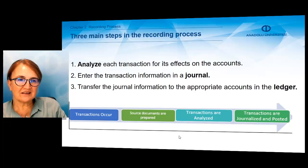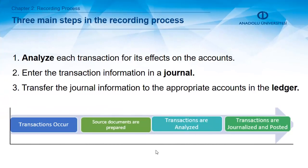After knowing the debiting and crediting rules, the main steps in the recording process must be known. First, you have to analyze each event and transaction for their effects on the accounts. After that, transaction information must be recorded in a journal. Journal is another accounting book. And after completing the journal entry, you have to transfer to the ledger accounts. Those are the three main steps of the recording process. By looking at the source document, you'll analyze a transaction, record it in the journal, and then the recorded journal entry will be transferred to the ledger — we call this the posting process.